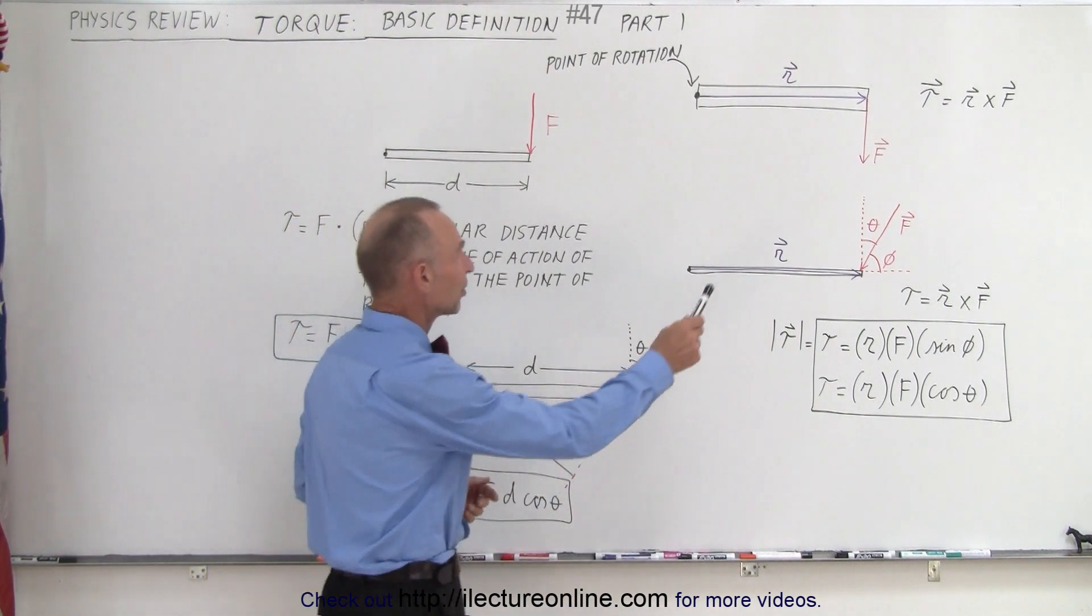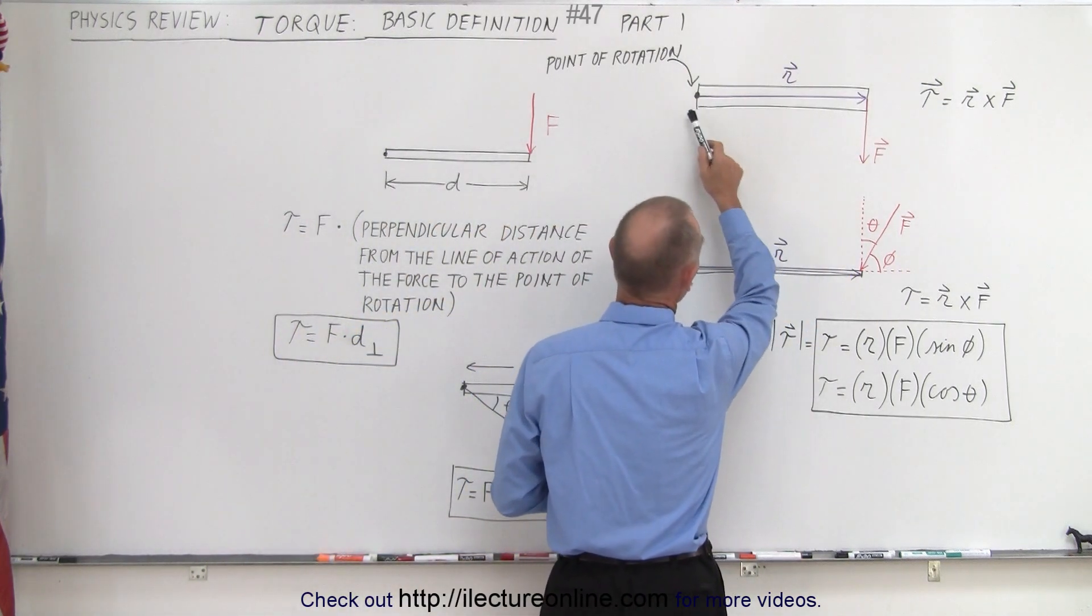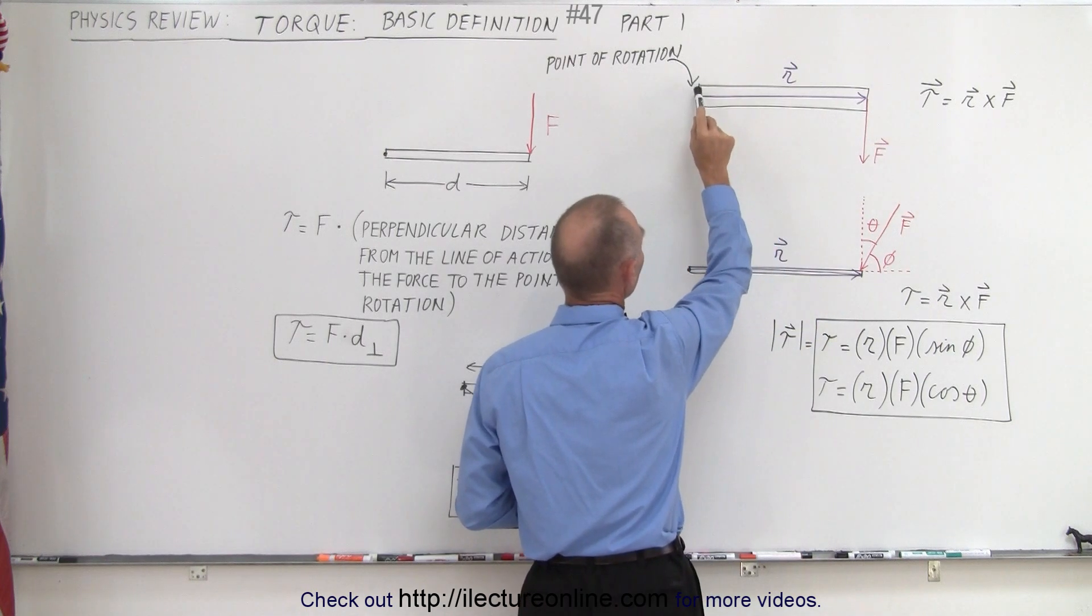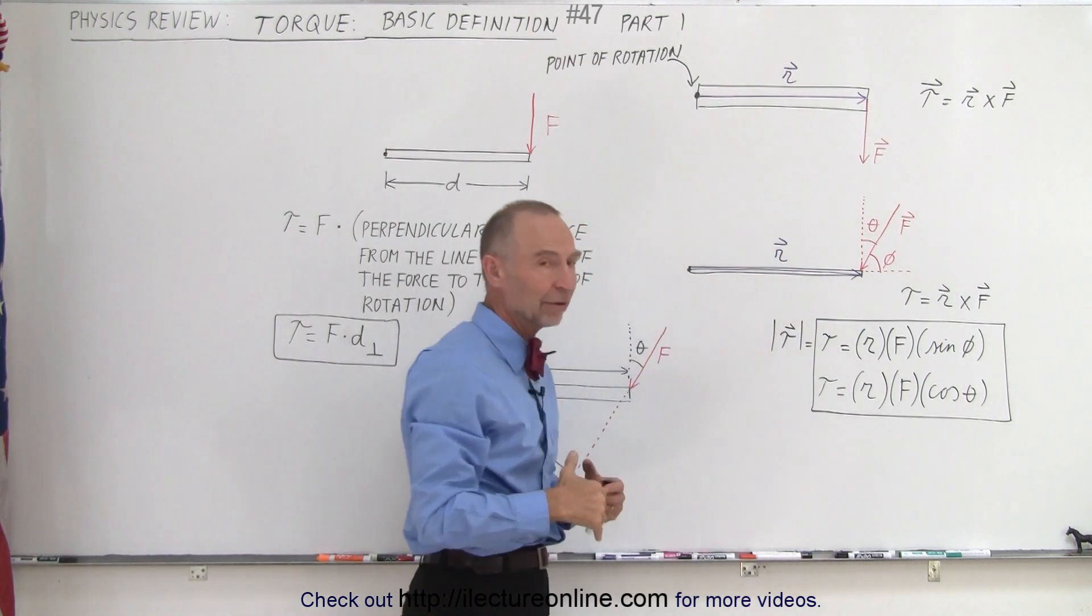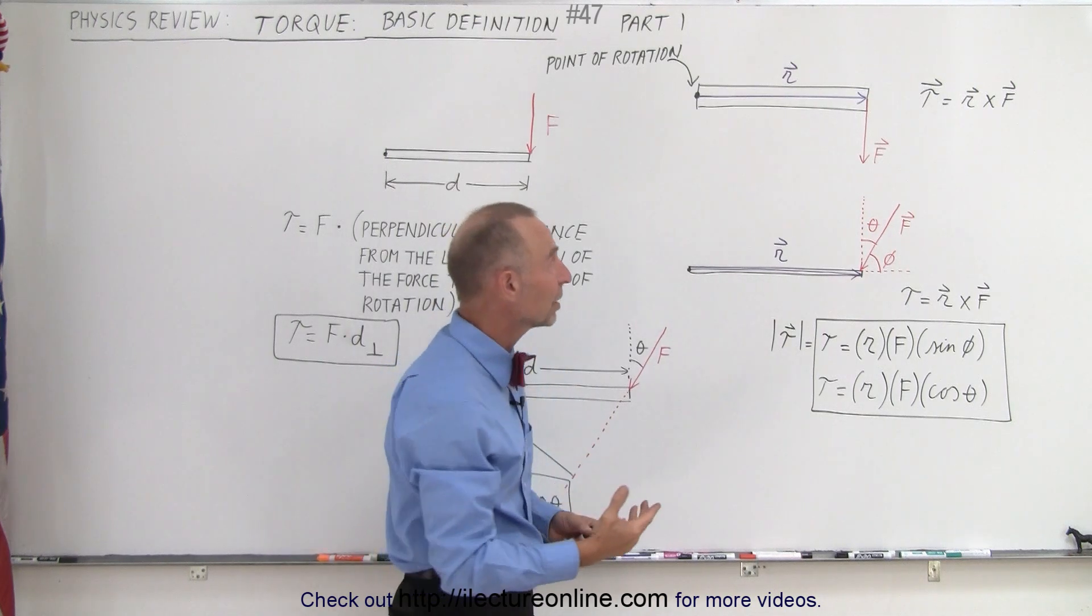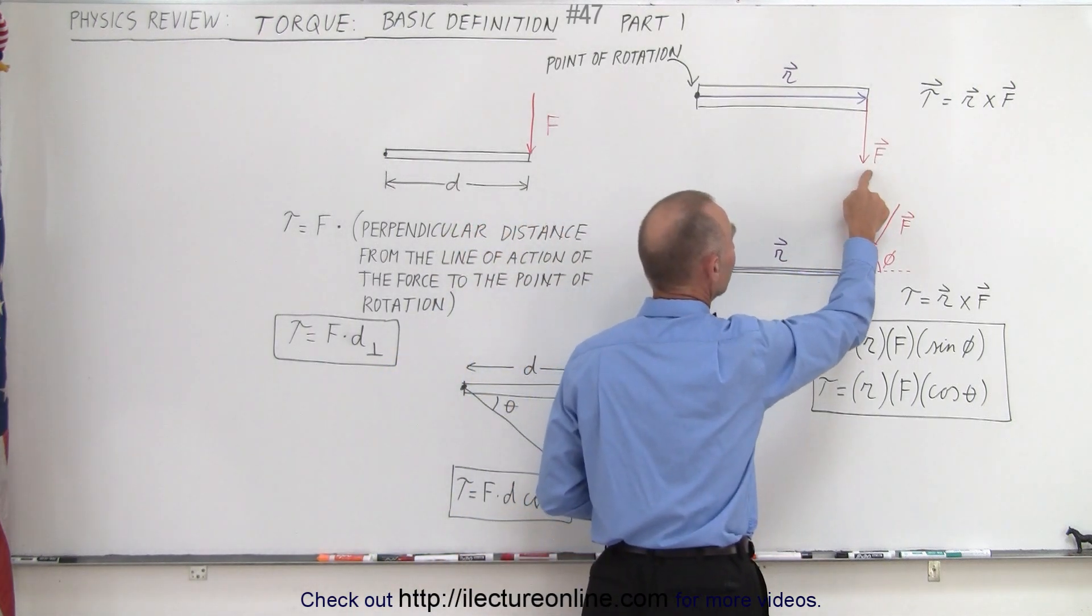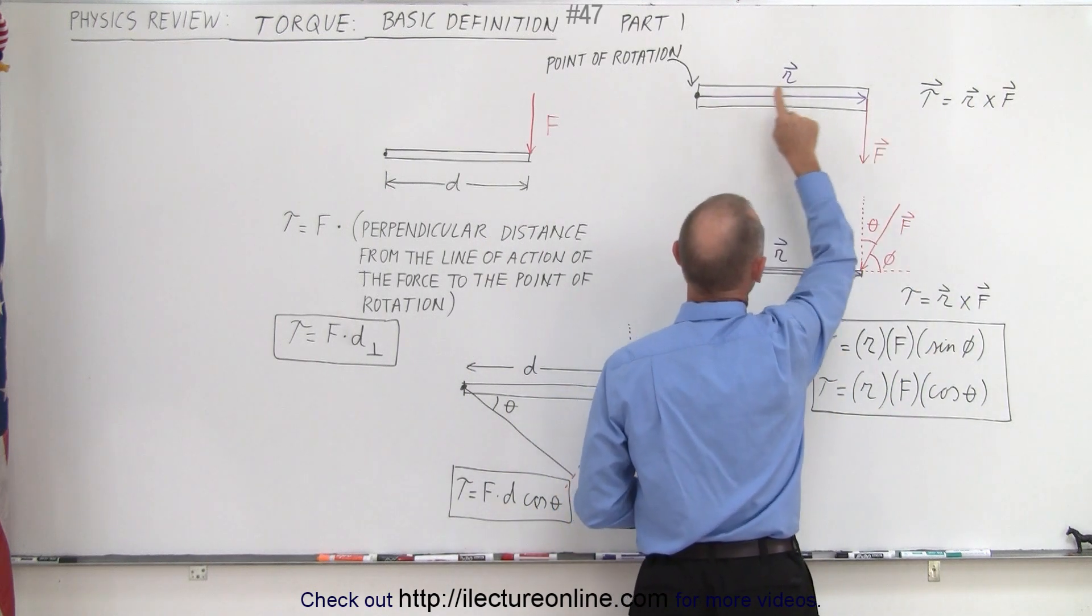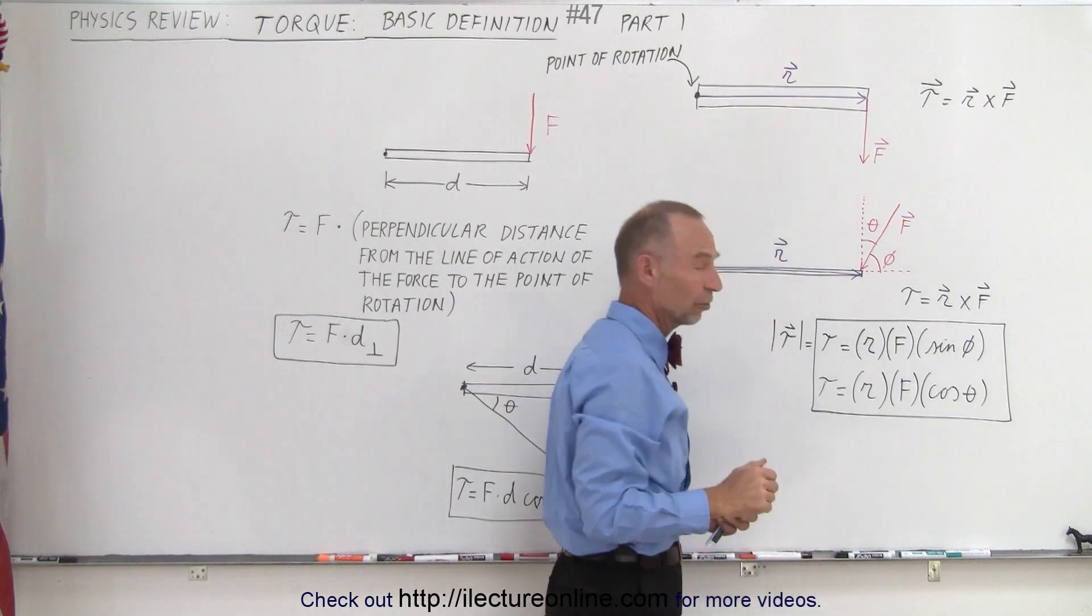Let's say we have an object that's rather long with distance r, and we apply a force f. It can rotate at that point. That force produces a torque, which is a vector quantity. Torque is defined as the cross product between the distance from the point of rotation to where the force acts, times the force.